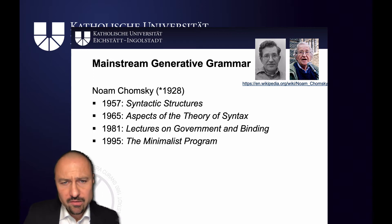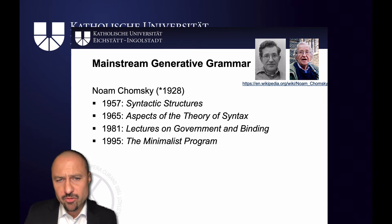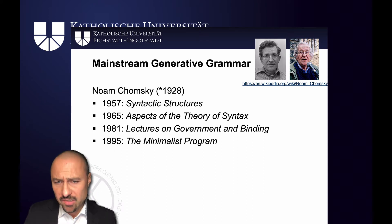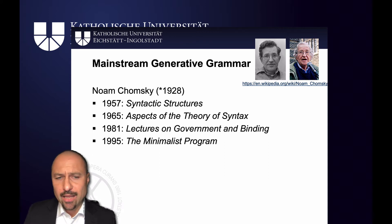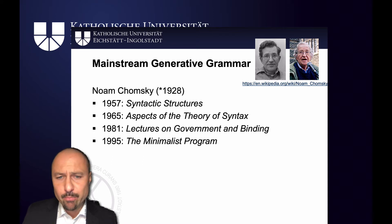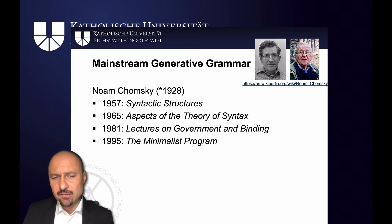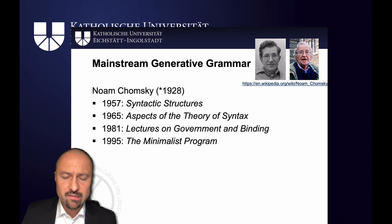His publications include Syntactic Structures in 1957, in which he started to develop his transformational grammar; 1965 Aspects of the Theory of Syntax, which put forward the claim that language is innate and that there is a universal grammar; and the model was later refined in Lectures on Government and Binding, and finally in the Minimalist Programme, which started in the 1990s.